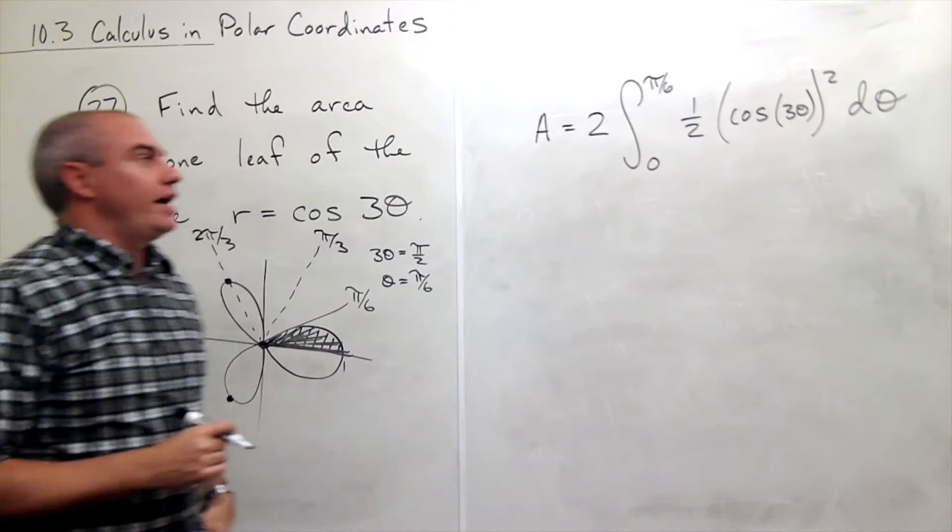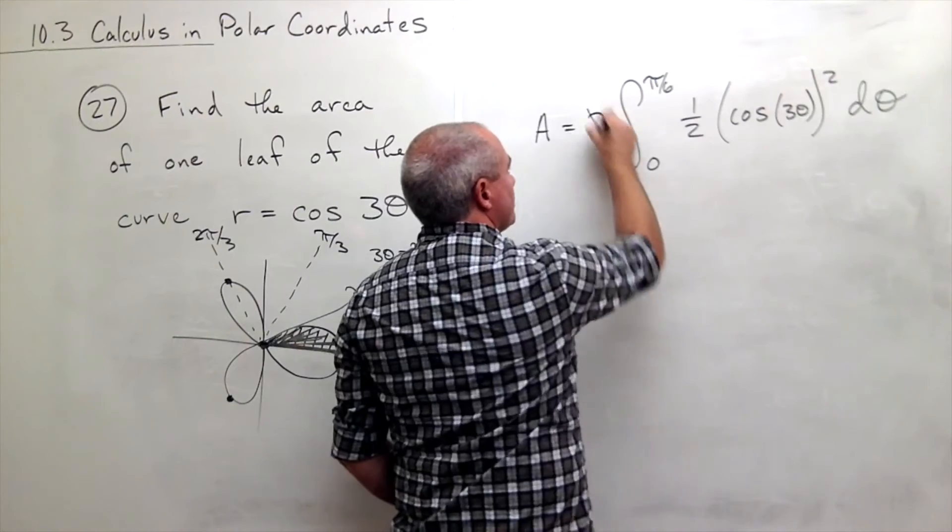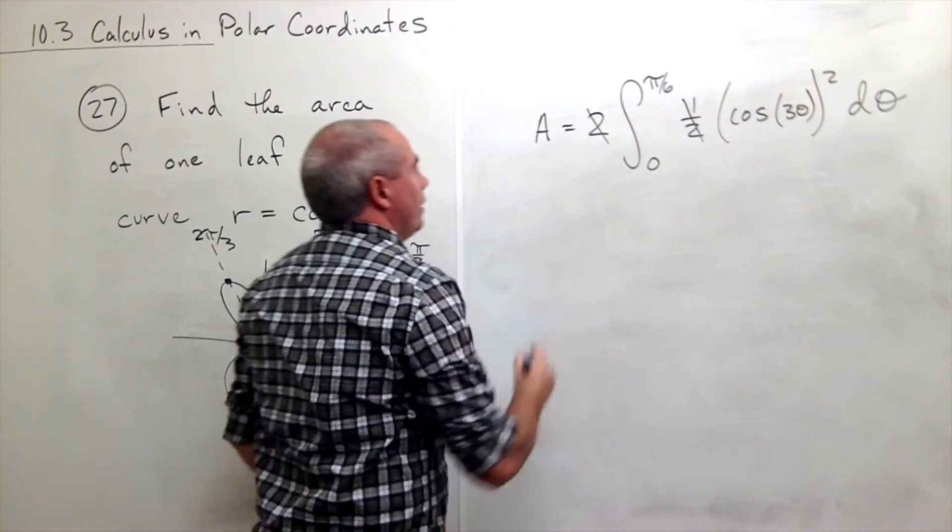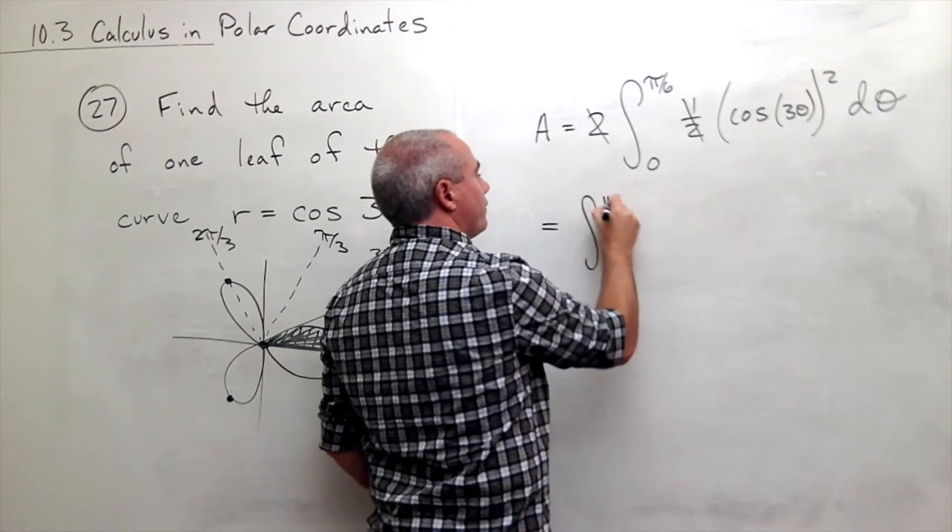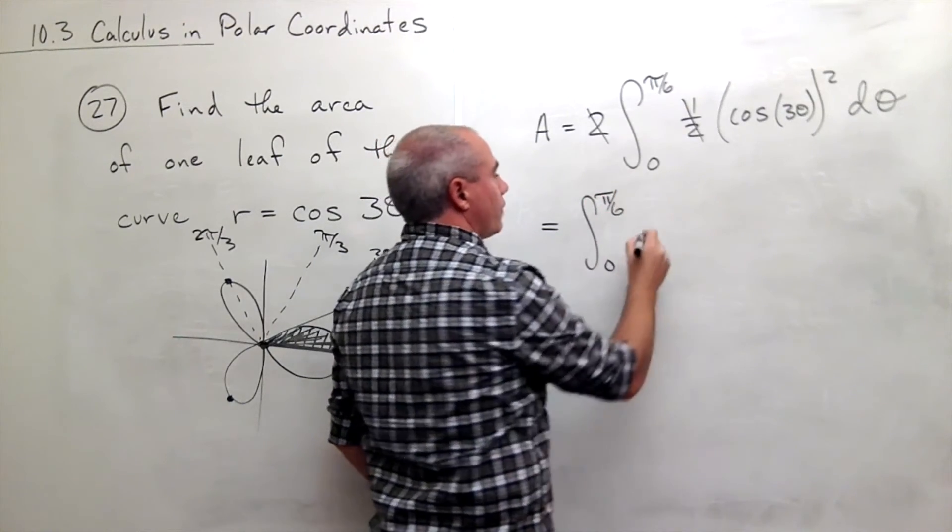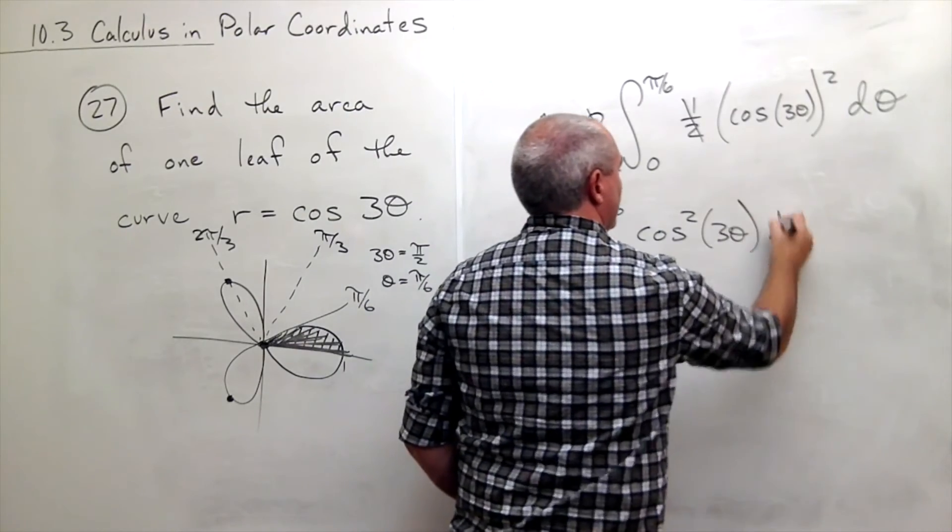All right let's go ahead and integrate it. I've got a two and I've got a one half so those cancel and I'm just left with the integral from zero to pi over six of cosine squared of three theta d theta.